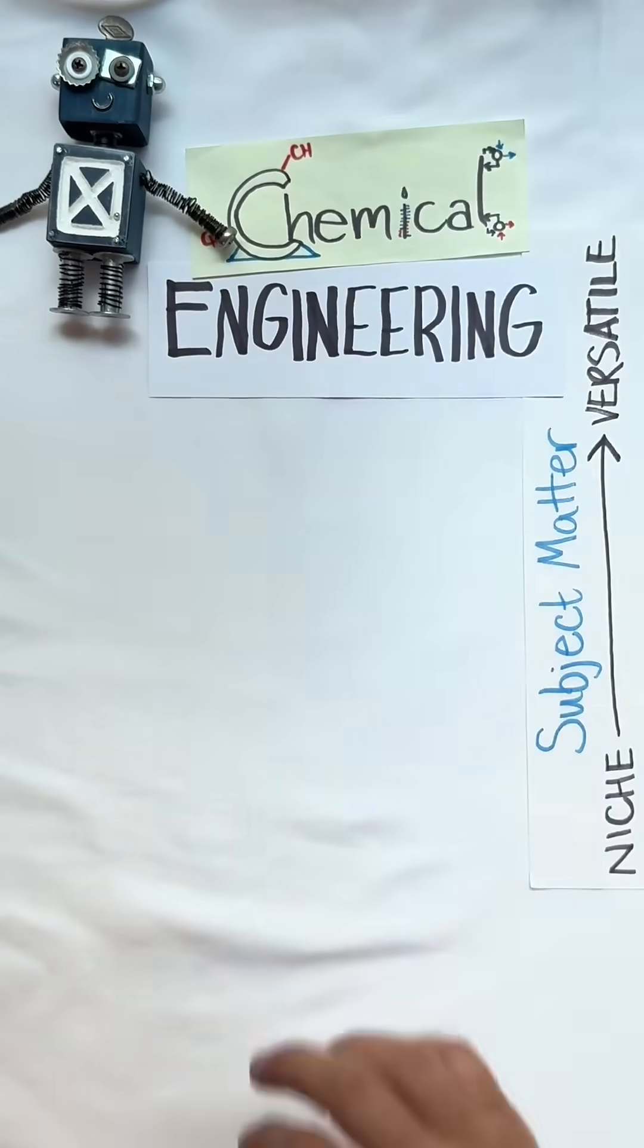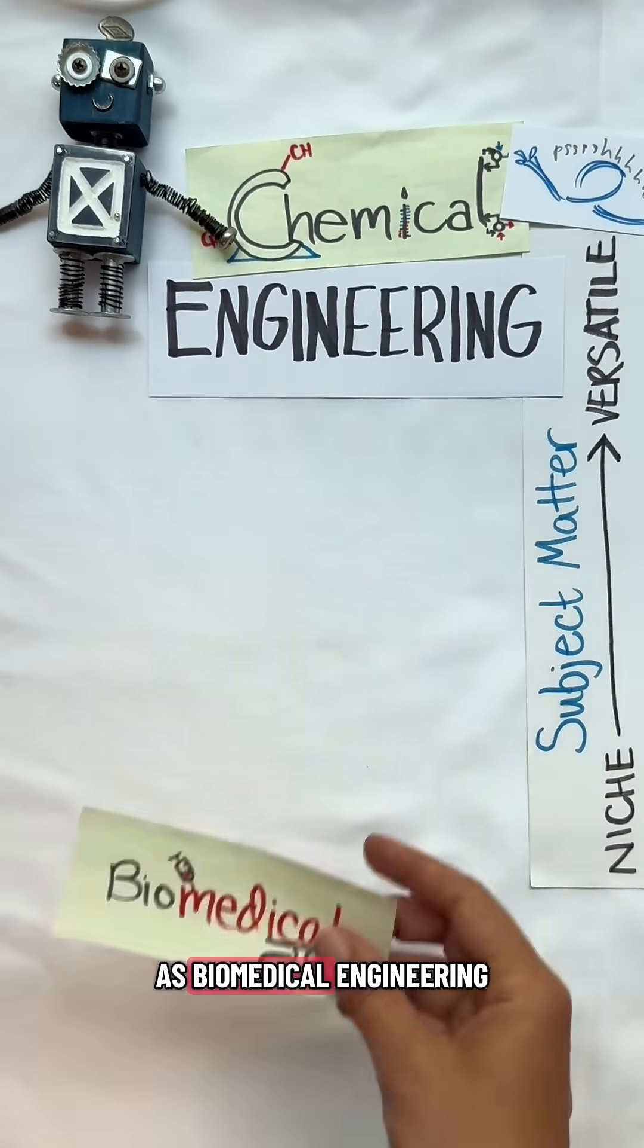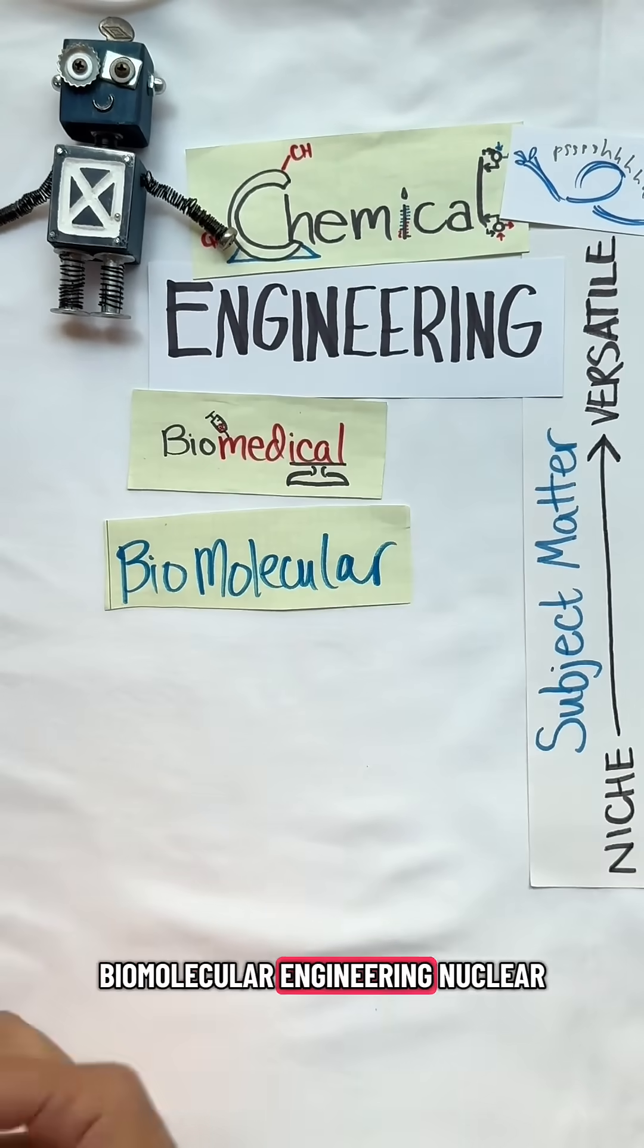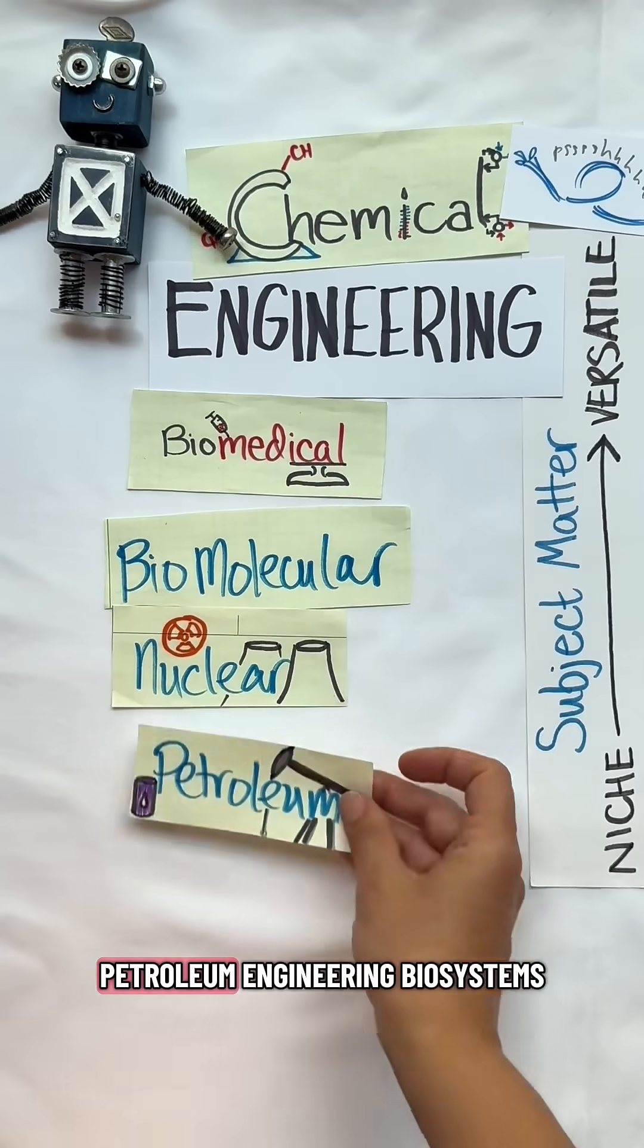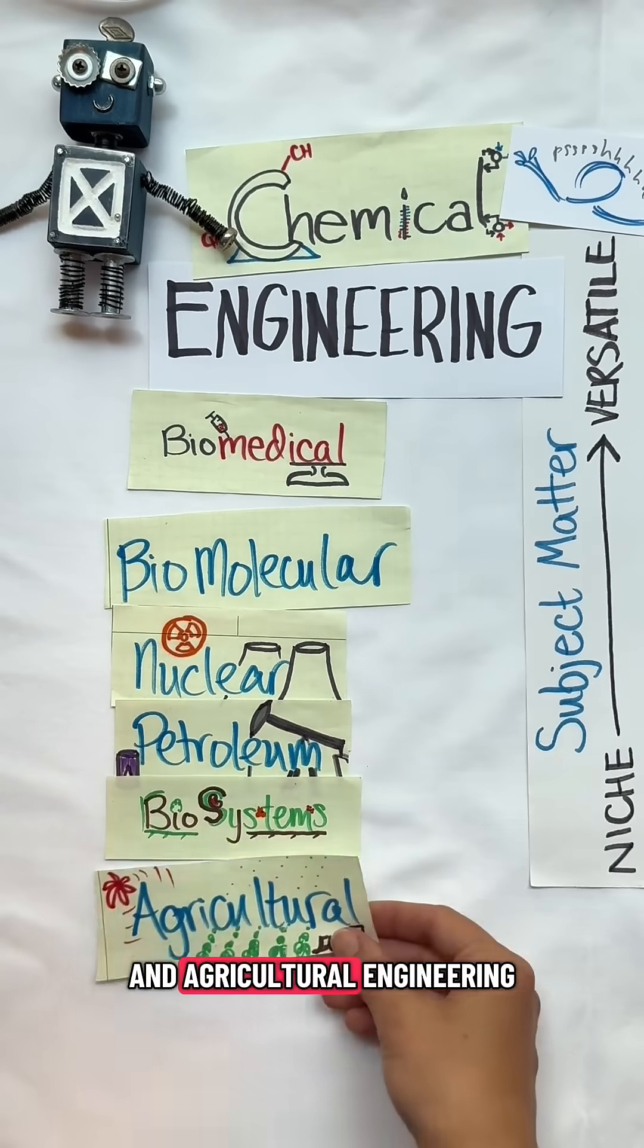Next is chemical engineering. Under chemical, you've got fields such as biomedical engineering, biomolecular engineering, nuclear engineering, petroleum engineering, biosystems, and agricultural engineering.